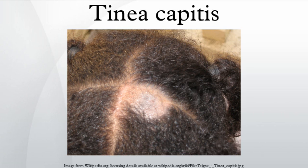It may appear as thickened, scaly, and sometimes boggy swellings, or as expanding raised red rings. Common symptoms are severe itching of the scalp, dandruff, and bald patches where the fungus has rooted itself in the skin. It often presents identically to dandruff or seborrheic dermatitis.